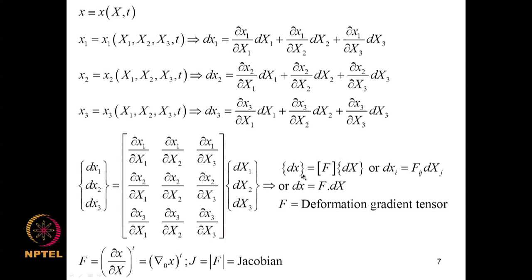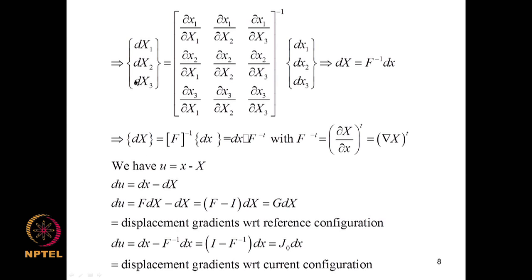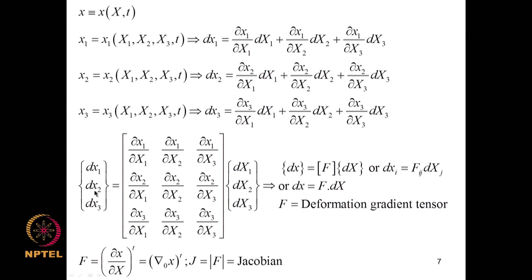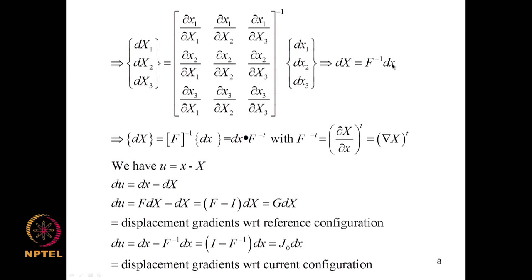We get the equation in matrix notation: dx = F dX; in index notation dxi = Fij dXJ; in tensor notation it is F·dX. The determinant of F is known as the Jacobian. By inverting this relation we get dX = F⁻¹dx. We have the displacement vector U = x − X, from which dU = dx − dX = (F − I)dX. This matrix G = F − I is the displacement gradient with respect to the reference configuration.